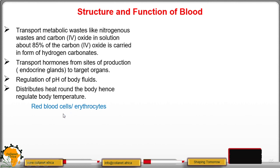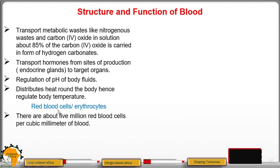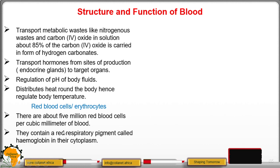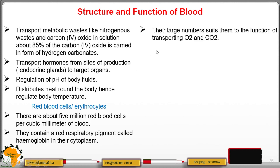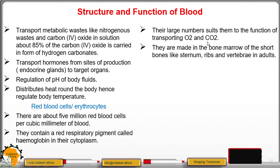Now the cellular components — beginning with red blood cells. There are about 5 million red blood cells per cubic millimeter of blood in human beings. They contain a red respiratory pigment called hemoglobin in their cytoplasm. They are large in number, making them suitable for transport of oxygen and carbon dioxide. In adults, red blood cells are made in the bone marrow of short bones like the sternum.